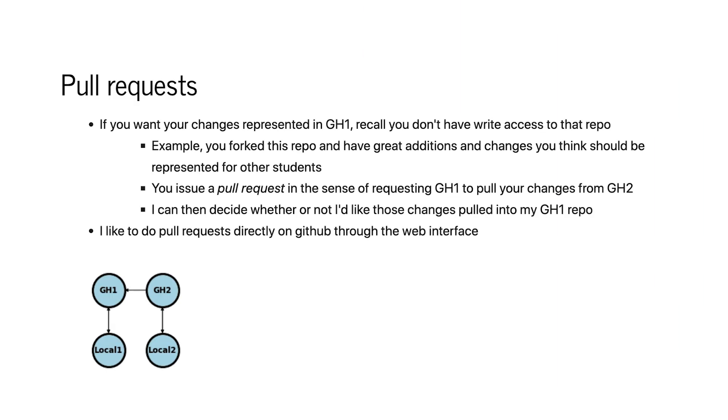Suppose you made changes to the book and said, 'Brian, these are mistakes, you have to change your book.' You don't have rights to have your changes automatically represented in my book. However, what you can do is ask me to incorporate those changes. The way you ask is with something called a pull request — you go on GitHub and because you forked from my parent repository, you issue a pull request saying: I've made some changes, I think they're good, you should represent them in your repository.